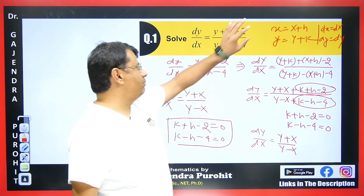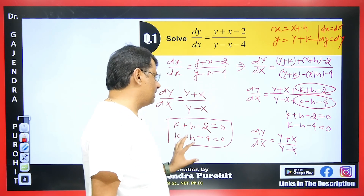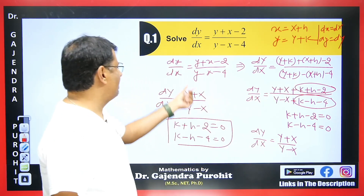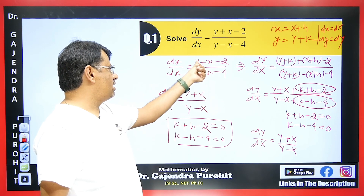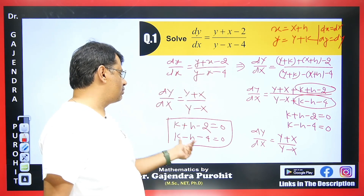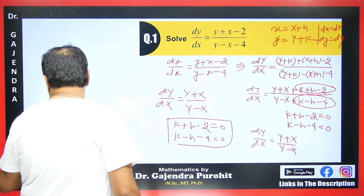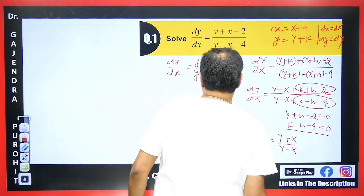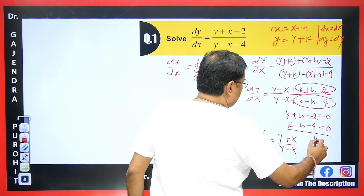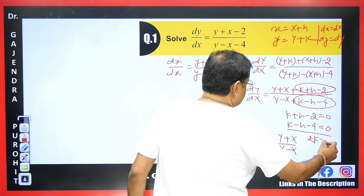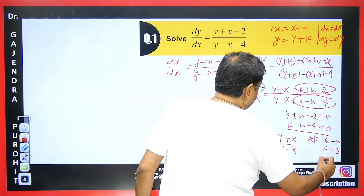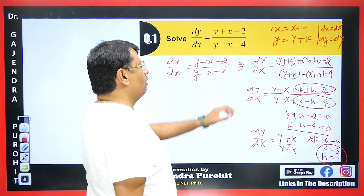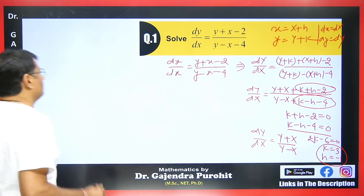Instead of doing all those substitution steps, directly replace x and y with capital letters wherever they appear, set the remaining constant expressions to zero, and solve. Now solving the two equations k + h - 2 = 0 and k - h - 4 = 0: adding them gives 2k - 6 = 0, so k = 3, and putting k = 3 gives h = -1. We will use these values of h and k at the end.